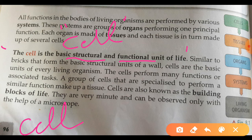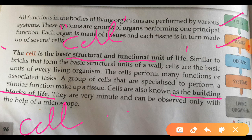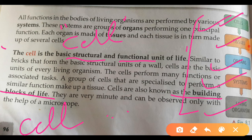Hence, the cell is called the basic structural and functional unit of life. It is also called the building block of life or the fundamental unit of life, because at the basic level, cells combine together to form tissues, then tissues combine to form organs, then organ systems, and finally the living organism's body is formed.